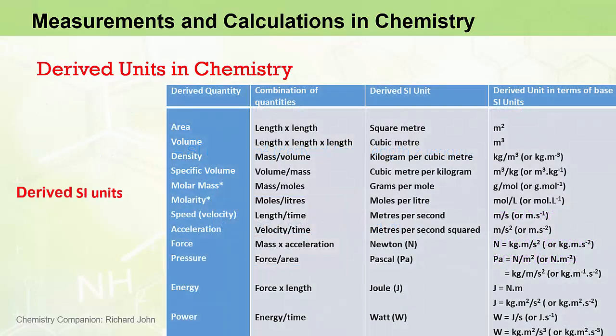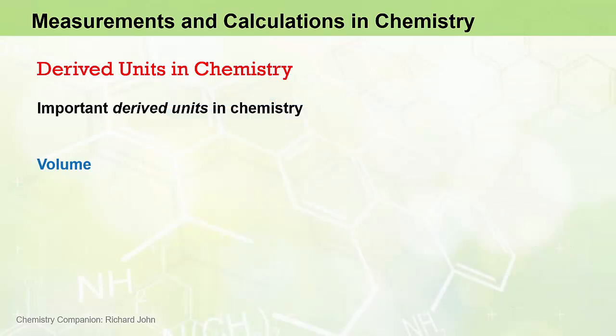The four derived units of most relevance to introductory chemistry in this table are volume, density, molar mass, and molarity. And we're going to look at them in some detail now, starting with volume.